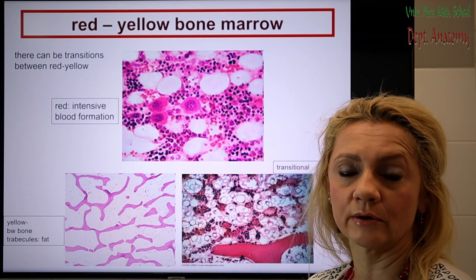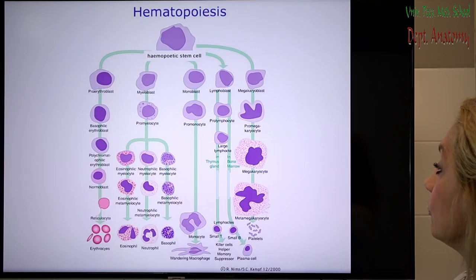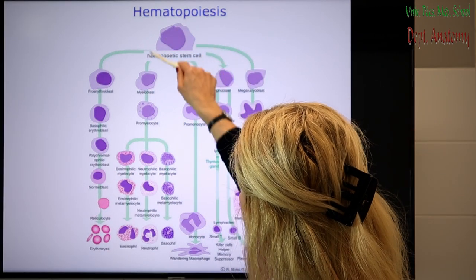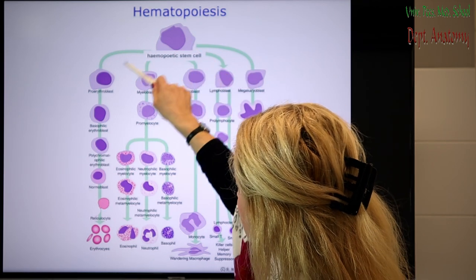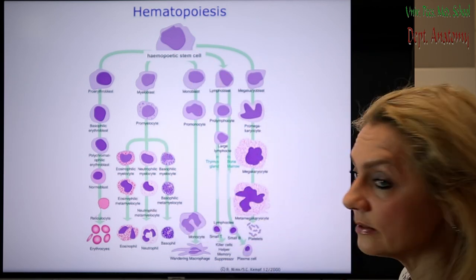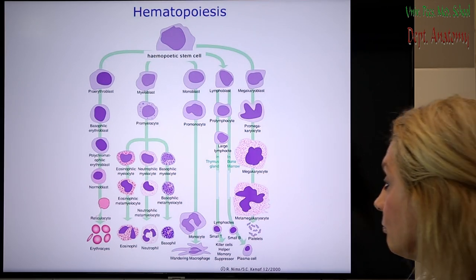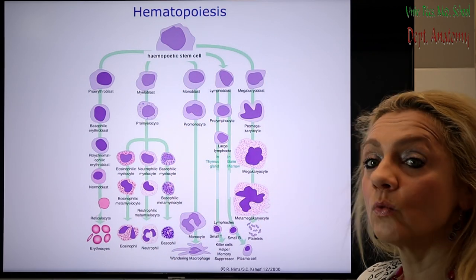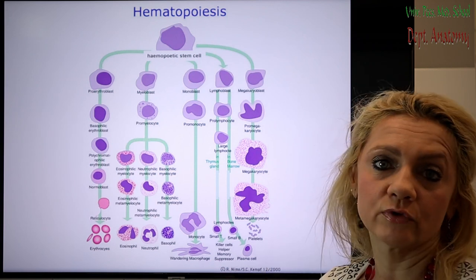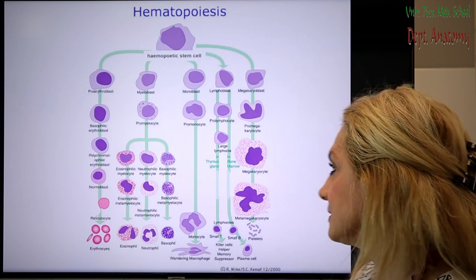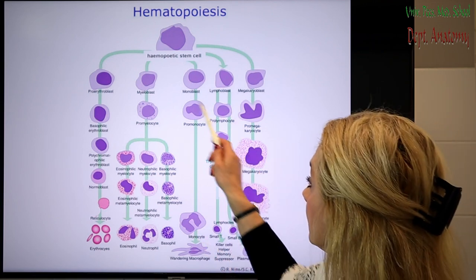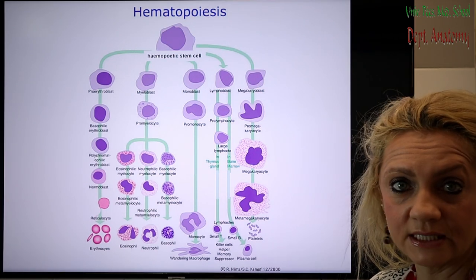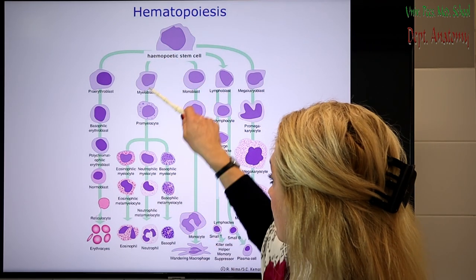This is what we're going to look at in detail, because we have one hematopoietic stem cell which then produces all the blood cells we learned about. The blood lines we're going to deal with: one for the red blood cell, one for the platelets, and several for the white blood cells. You can go back to this picture at the end, because it summarizes all the necessary stages you need to know.